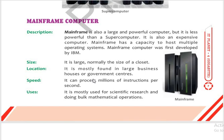In the movie Enthiran (Robot), you can see mainframe computers being used for gaming, hosting games for many users simultaneously. The mainframe is mostly found in large business houses or government centers. Its speed allows it to process millions of instructions per second, which is necessary to serve many users at the same time. It is mostly used for scientific research and bulk mathematical operations.